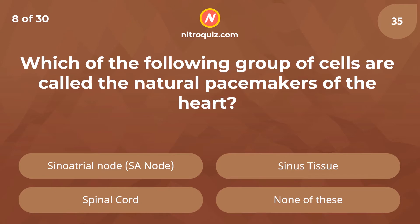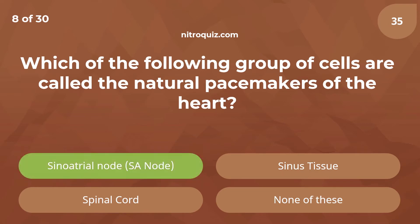Which of the following group of cells are called the natural pacemakers of the heart? Answer is sinoatrial node, or SA node.